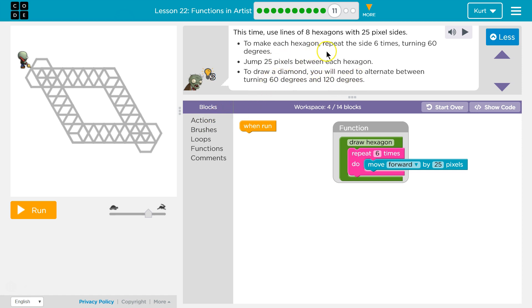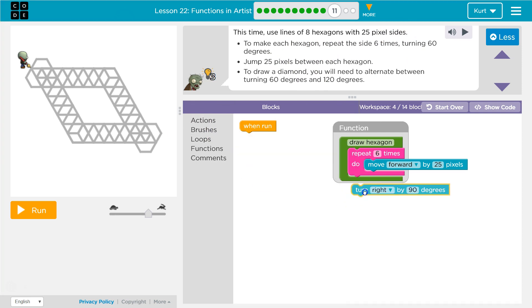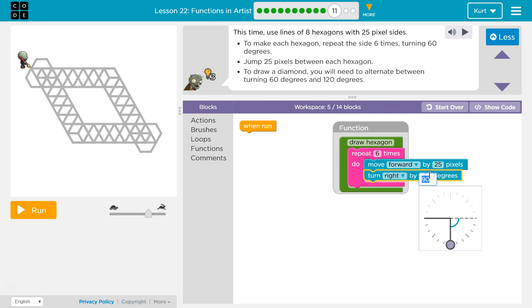Well we're going to want to turn 60 degrees. This was for the diamond. So six sides turning 60 degrees. Turn 60 degrees for our hexagon.